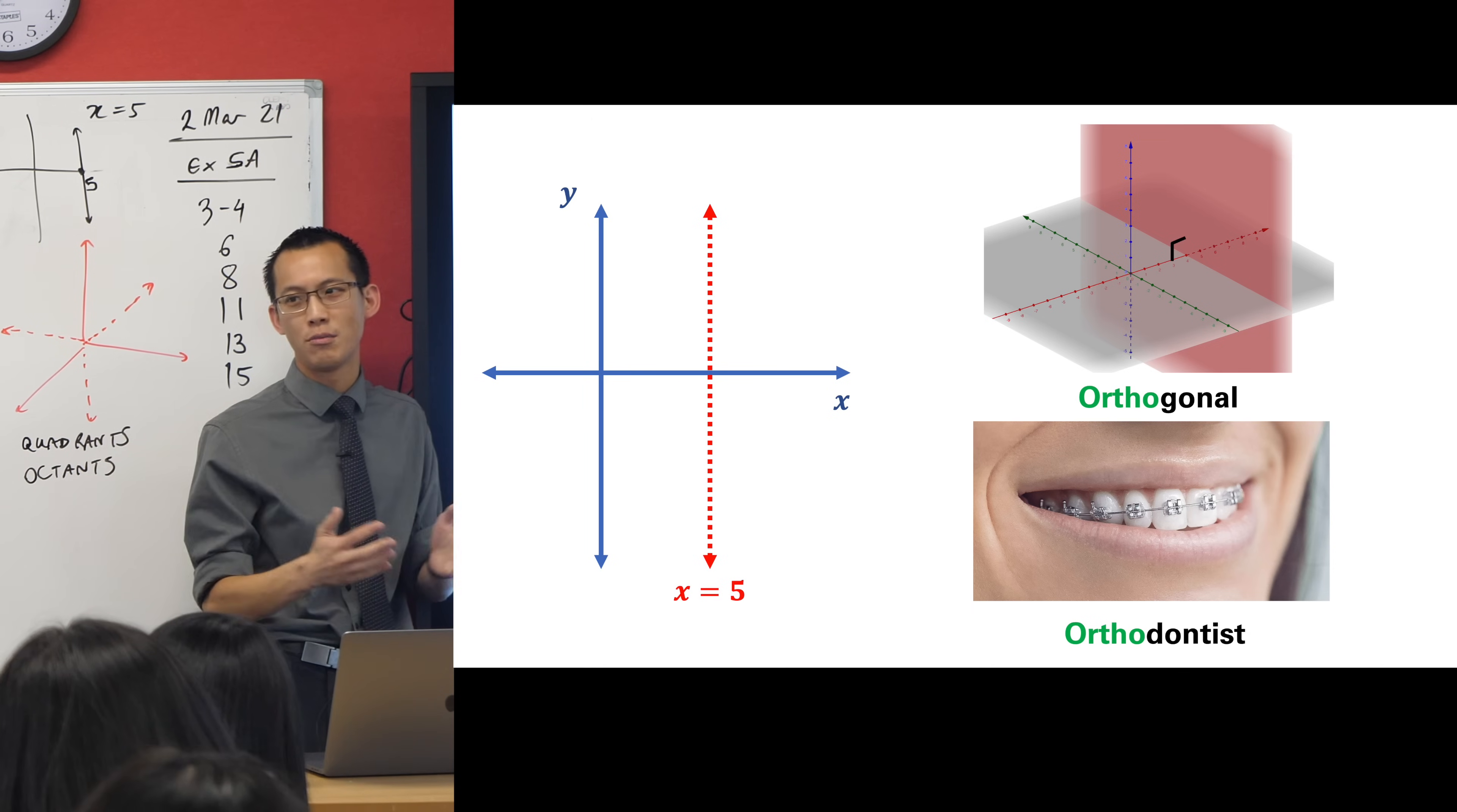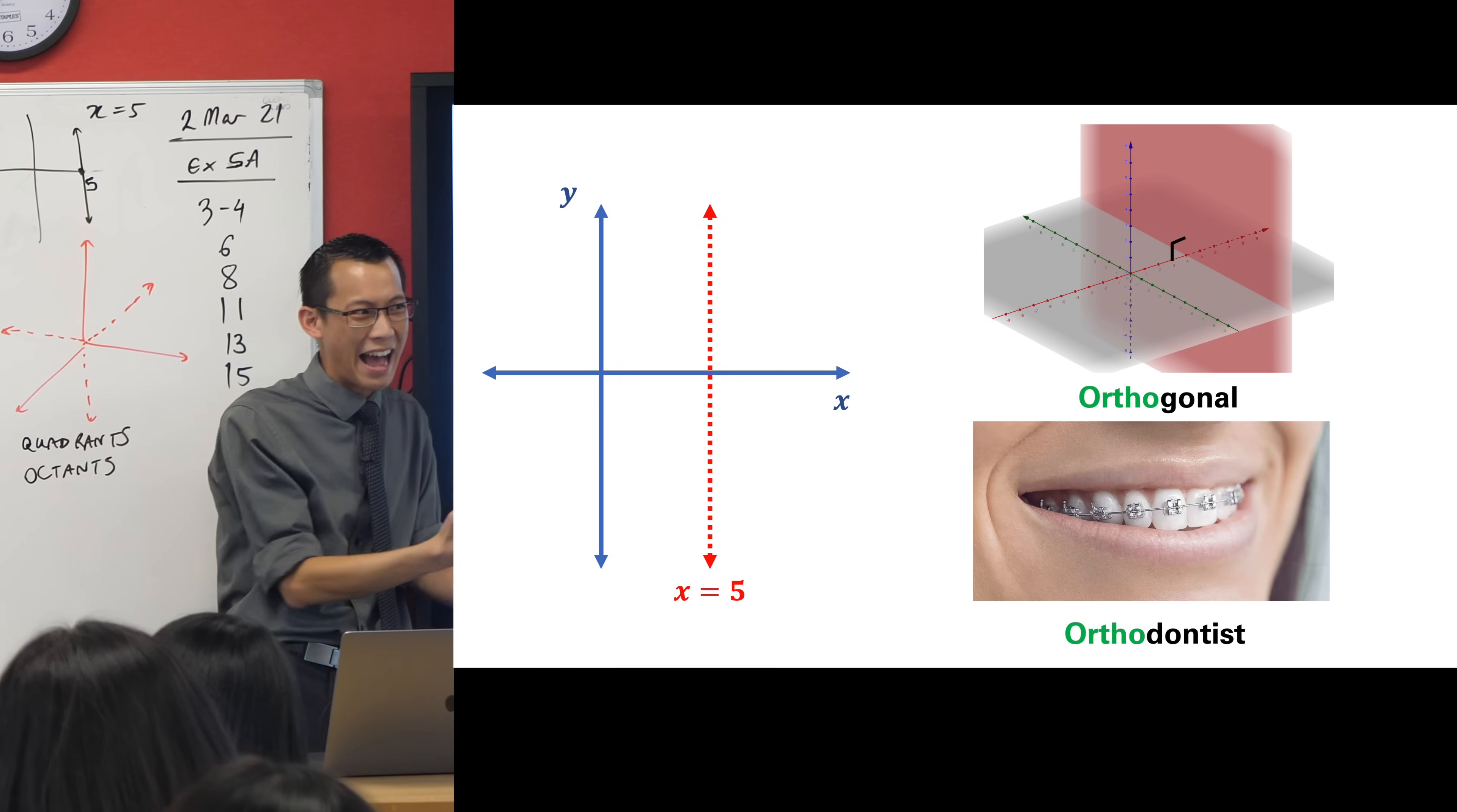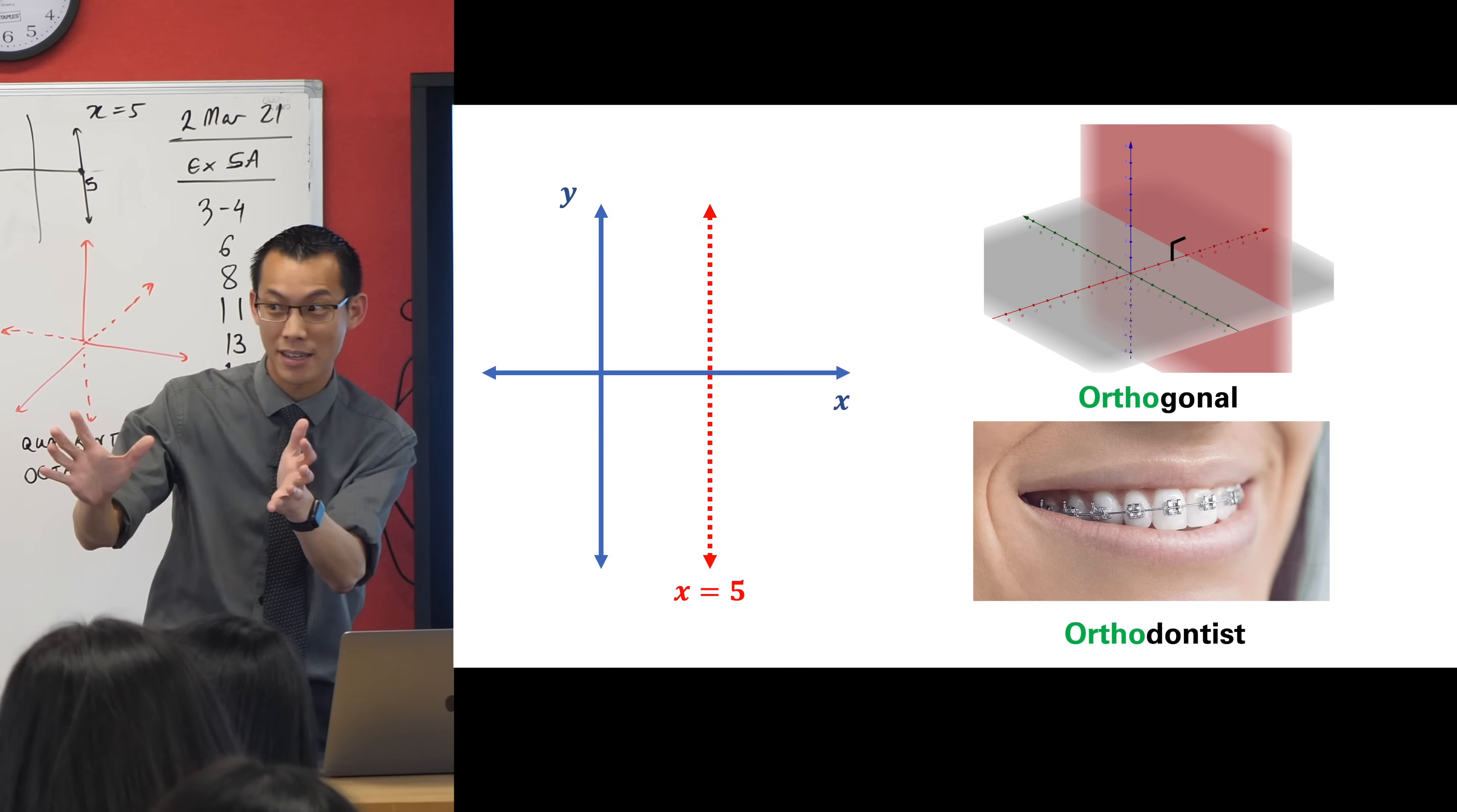So tell me, please tell me, what does orthogonal actually just mean? Right angled. That's all it means.